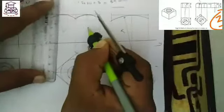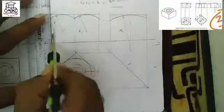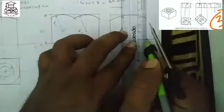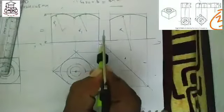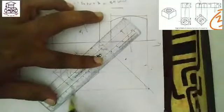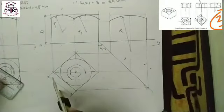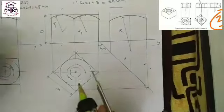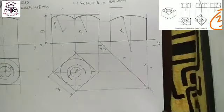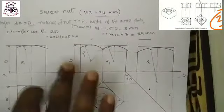This radius R1 applies to all three curves — this one also R1 radius, and this one also R1 radius. The dimension is d, at 45 degrees. This side of the square is W, where W equals 1.5 times d plus 3 mm. The three-quarter circle dimension is d. This completes the two views of the square nut.